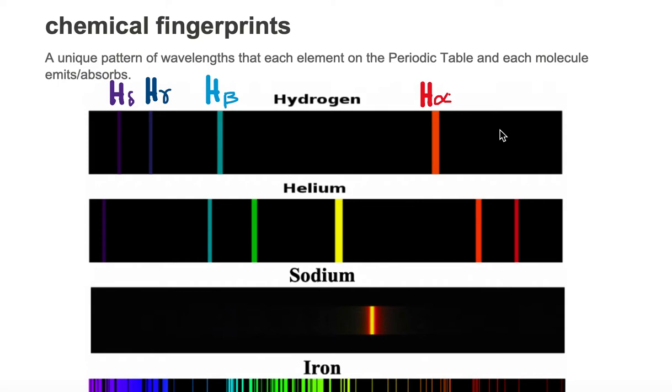Now hydrogen emits this particular color of red, so we call it hydrogen alpha. It also emits this teal color which is called hydrogen beta. And if you look carefully you see this blue line that's an emission that's called hydrogen gamma and this violet line which is called hydrogen delta.